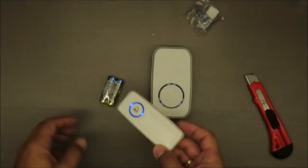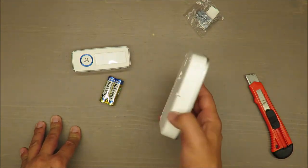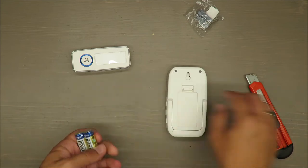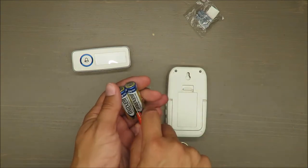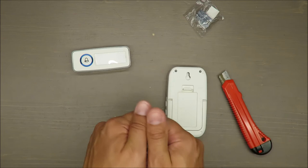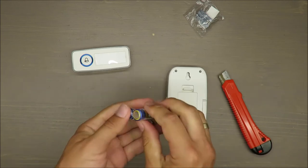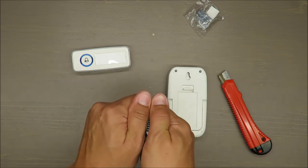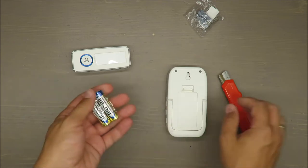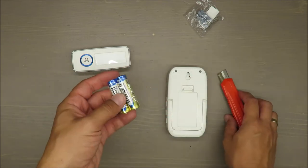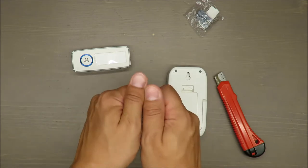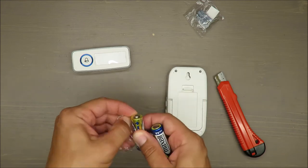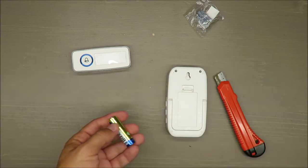What I missed in the manual is the distance - from what distance will this doorbell work? I know there are factors that can influence the efficiency: do you have a building made of brick or wood, what is the battery condition? Everything matters, but at least as a benchmark, I would rather want to have such information from the producer, but you cannot find it.